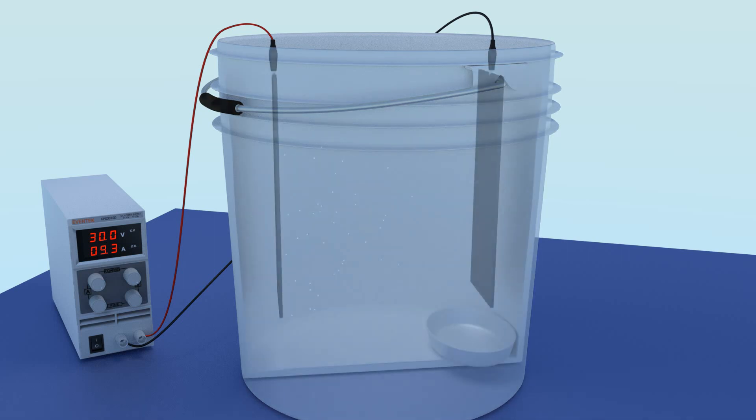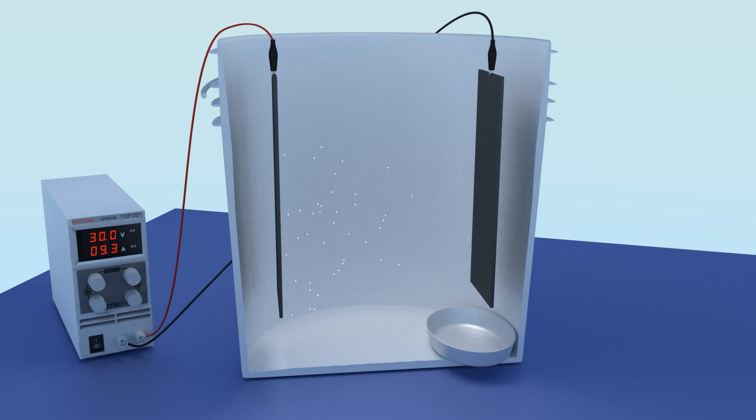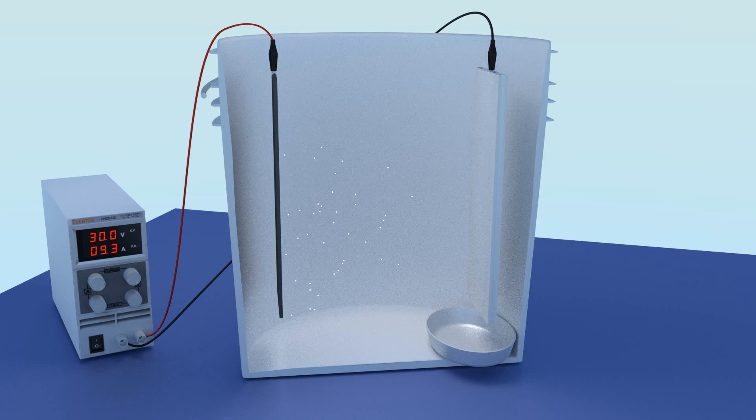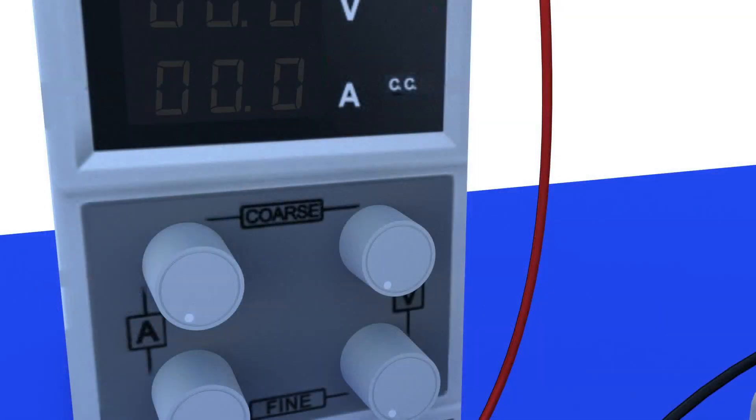And either a dish or a shallow bowl. This will catch any metal that falls off your cathode. If you are going to use this process on a regular basis, you might want to purchase an anode bag, using it instead of the bowl.